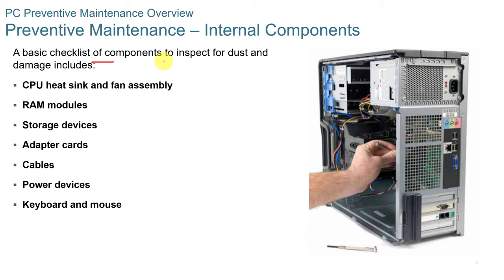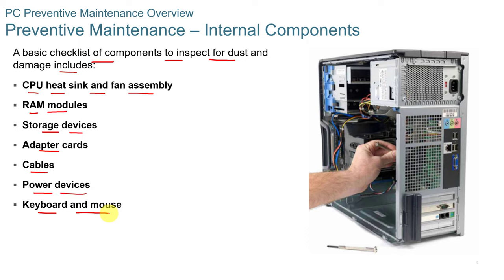A basic checklist of components to inspect for dust and damage includes the CPU heat sink and fan assembly — check it for dust and obstructions. Check RAM modules for dust buildup. Storage devices should be clean and clear for airflow. Check adapter cards and cables for dust accumulation. Power devices, keyboard, and mouse should also be kept clean. Keyboards probably accumulate more dust and grime than any other part of the computer.